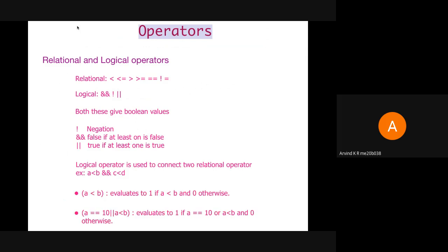The precedence of a logical operator is lesser than that of a relational operator. So in this case, 'a < b' evaluates to 1 if a is lesser than b, or else it becomes 0. And 'a == 10 || a < b' becomes true if at least one of the conditions is satisfied, otherwise it becomes false.